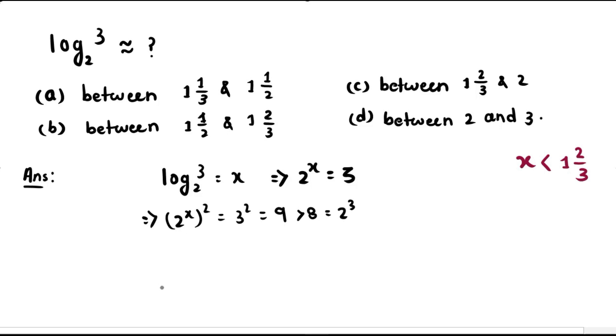Which then means 2^(2x) is greater than 2³. So then 2x is greater than 3. We then divide both sides by 2. So x is greater than 3/2, which is equal to 1 and 1/2, and this is the lower bound.